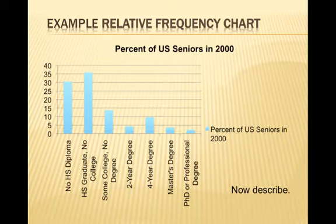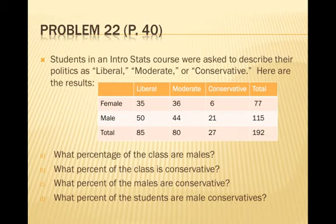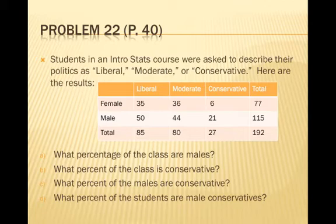The next problem is number 22 from page 40. Students in an introductory statistics course were asked to describe their politics as liberal, moderate, or conservative. We have a contingency table: overall 85 liberal, 80 moderate, 27 conservative; 77 female and 115 male. Those are marginal distributions. Conditional on being female: 35 liberal, 36 moderate, 6 conservative. Conditional on being male: 50 liberal, 44 moderate, 21 conservative.